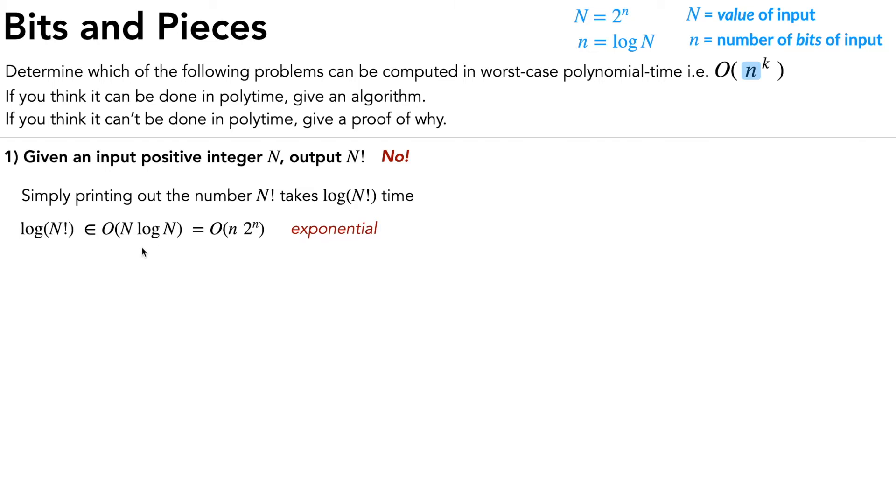And intuitively, it feels like a linear time algorithm because you've got this linear loop that keeps multiplying to calculate the factorial. But remember, this is linear in big N, and we are looking in terms of little n. So the reason this algorithm doesn't work is because it actually is exponential in terms of little n, in terms of the number of bits that the input n is.